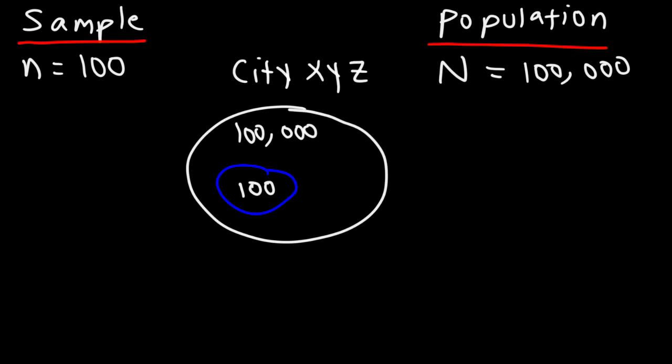Now how do we go about calculating the sample mean? The sample mean, represented by X bar, is basically the sum of all the data values divided by n, the number of individuals in a sample.